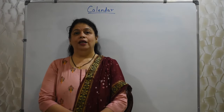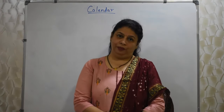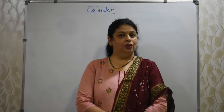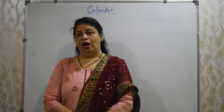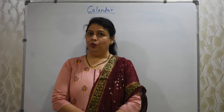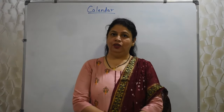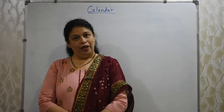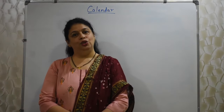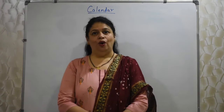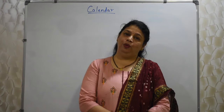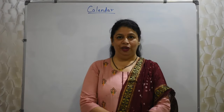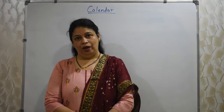A calendar is for 1 year, and that year has 12 months. Out of those 12 months, January, March, May, July, August, October and December have 31 days.